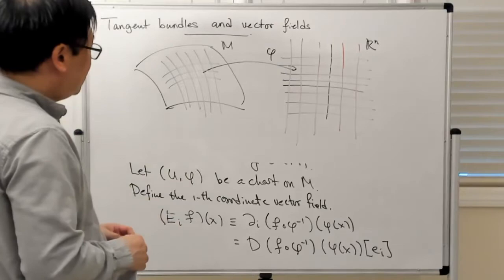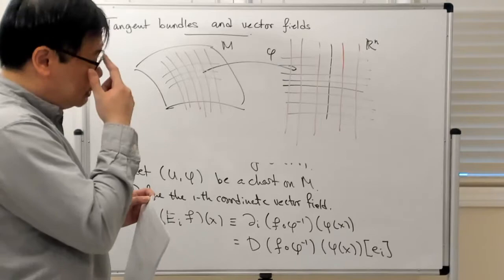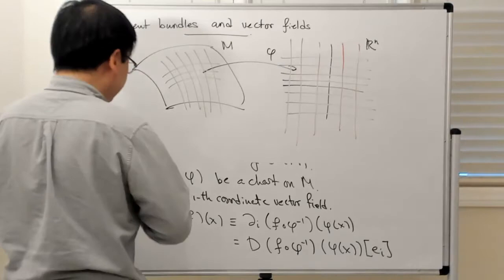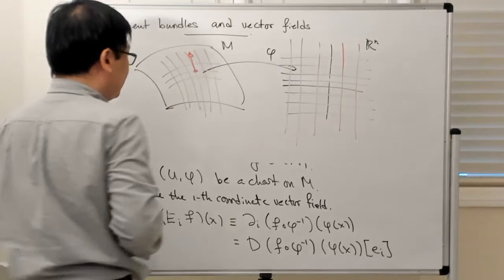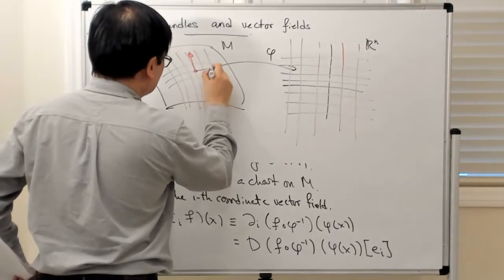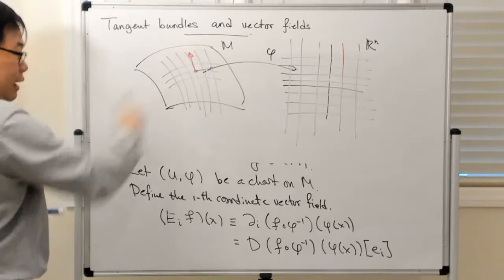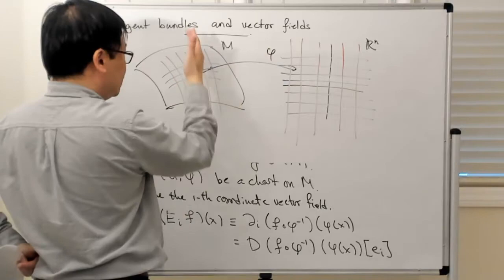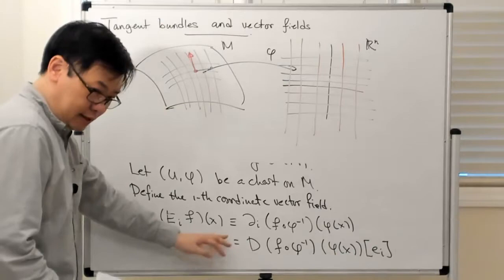One way of thinking about tangent vectors abstractly is to relate them to curves, and to think of the tangent vectors as being morally the derivative of the curve in the parameter. So if you have a point, this might be one of the tangent vectors — it's the tangent vector to the curve defined by these constant coordinate lines, pulled back to the manifold.